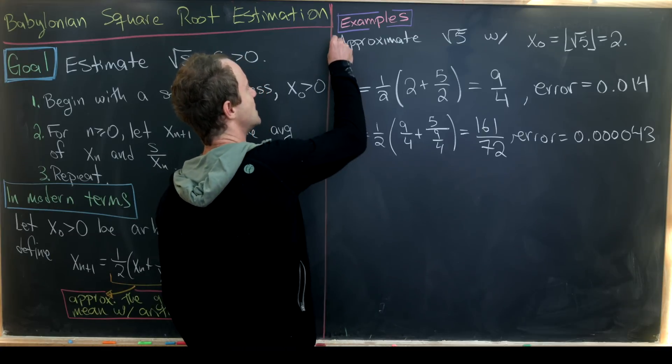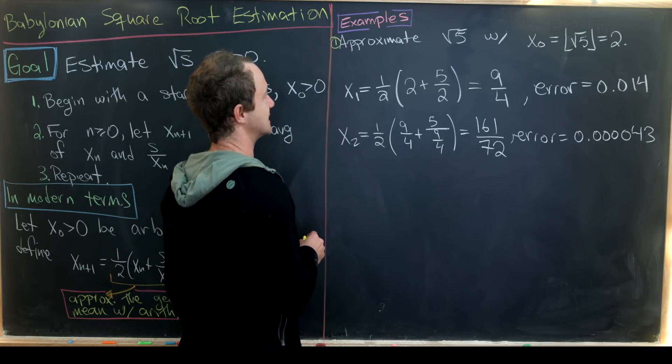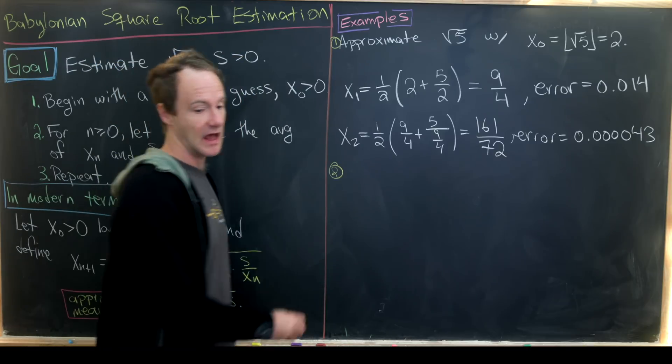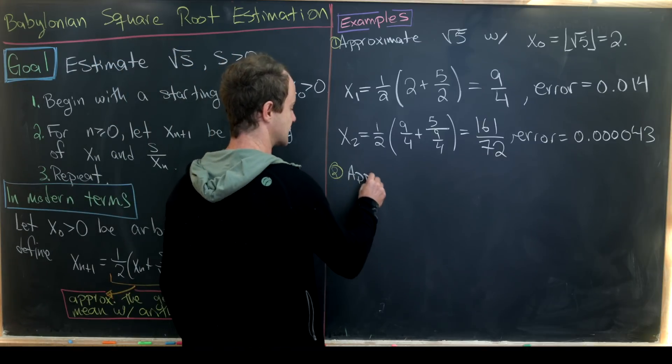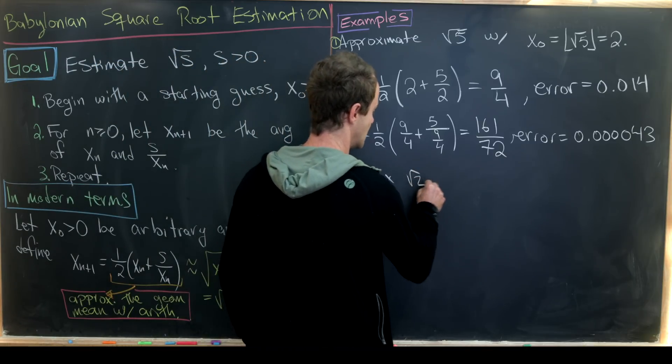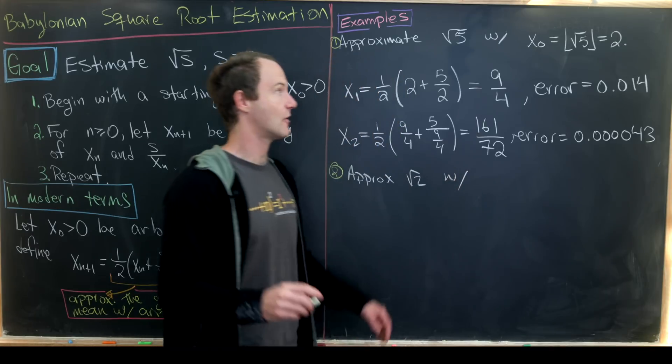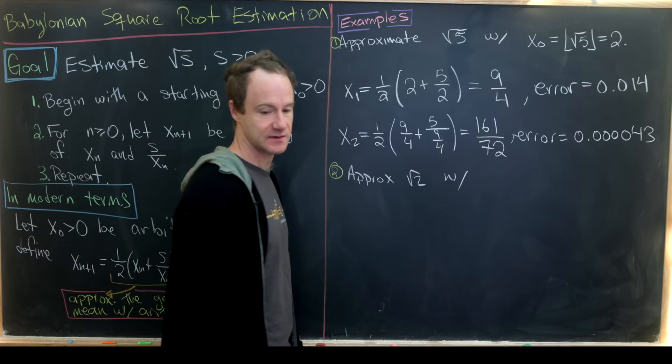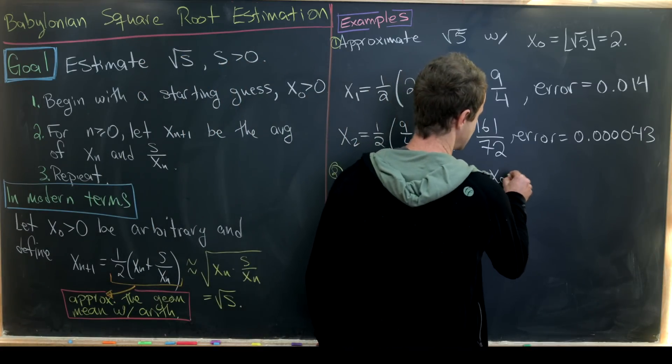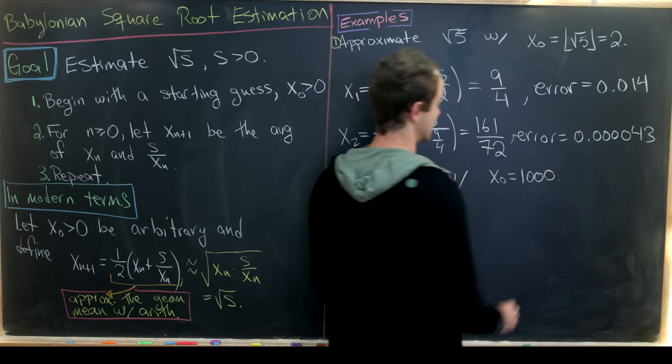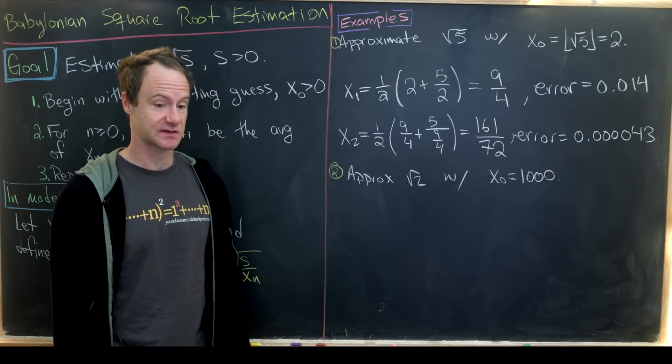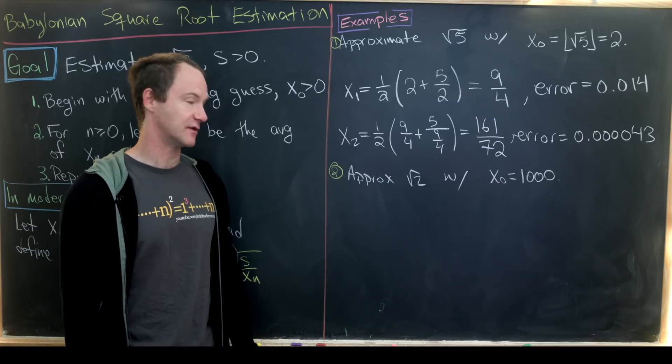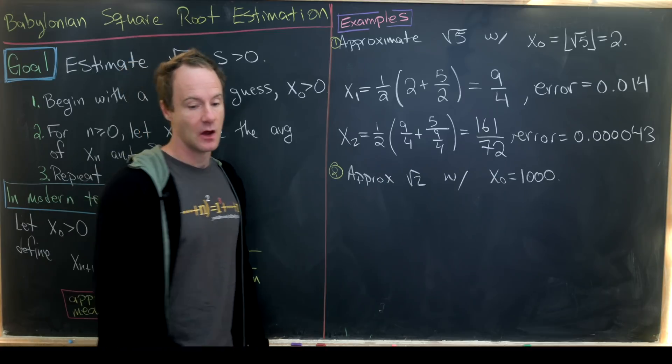Let's maybe call this one in hindsight example 1. And now let's look at example 2. Here we're going to approximate the square root of 2 with what I'll call a bad choice for x₀, a bad initial guess. And what would a bad initial guess be? Well, I think 1,000 is a pretty bad initial guess, because 1,000 is most definitely way bigger than the square root of 2.